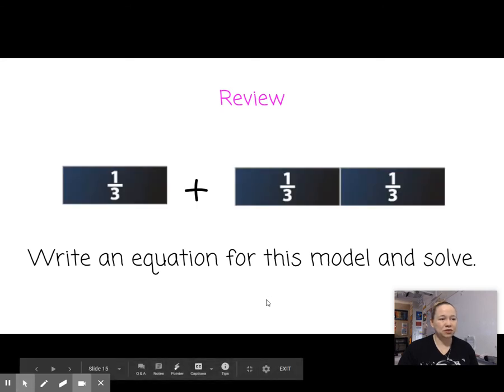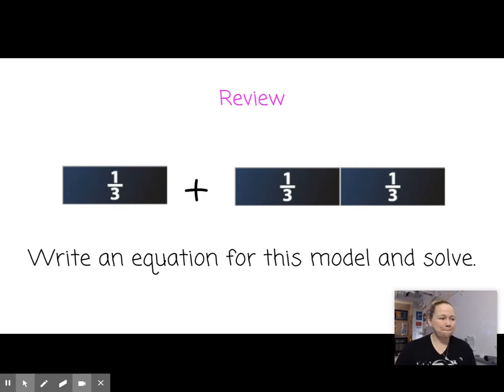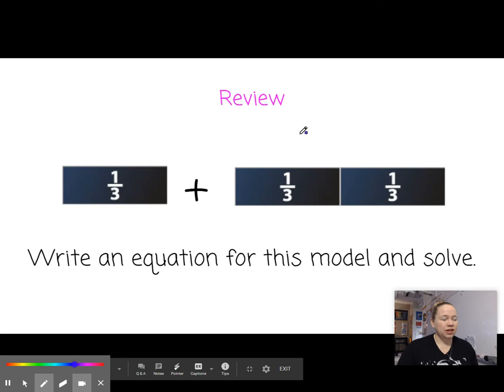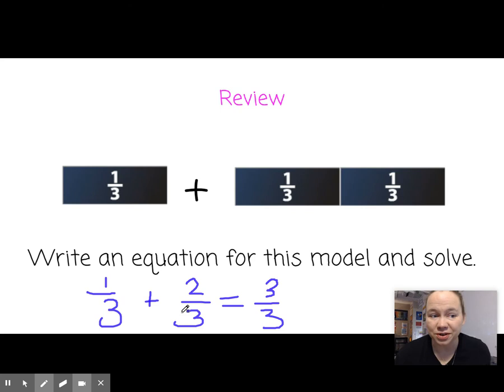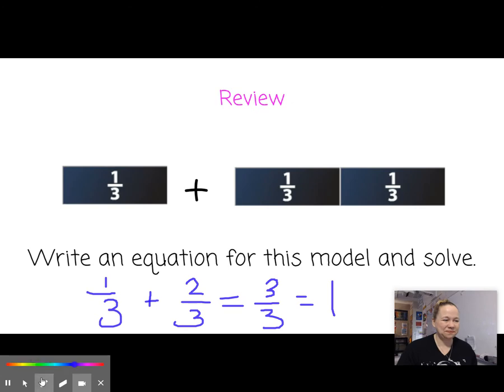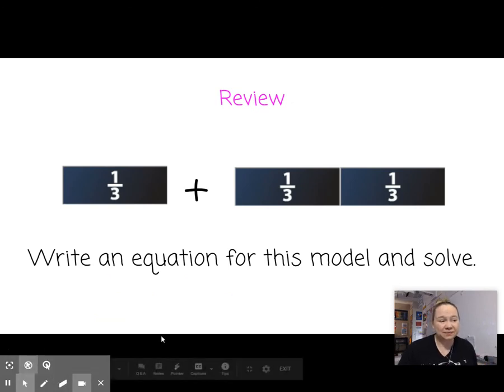Let's look at this review. Write an equation for this model and solve. Go ahead and do it, and then come back and see if you get it right. So the equation for this would be one third plus two thirds, and solve. Three thirds really equals, do you remember? Remember that this line is also a division line, so three divided by three equals one. One whole. Did you get that? I can't trick you. I tried.